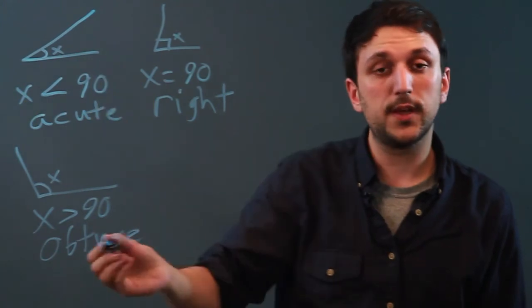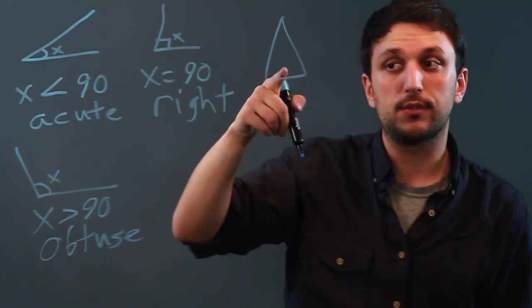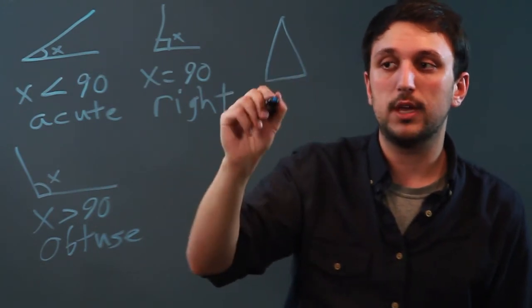So those are your three types of angles. Now for shapes, any three-sided figure that's closed is called a triangle.